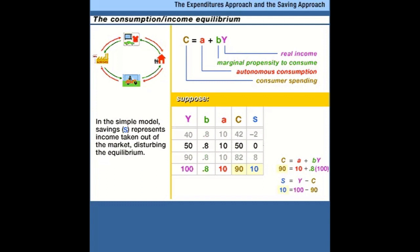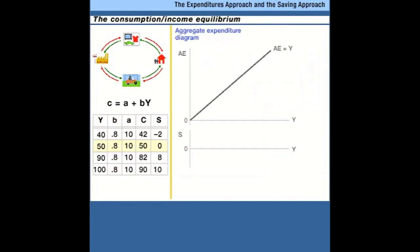Let's look at that outcome in the aggregate expenditure diagram. We have a consumption function with an intercept of A — which in our case is 10 — and a marginal propensity to consume of B, which is 0.8. Here's the consumption function, C as a function of Y, income. Now let's look at the point where the consumption function crosses the aggregate expenditure equals income line — here we have macroeconomic equilibrium. At this level of output Y, which we've calculated to be 50, something very interesting happens.